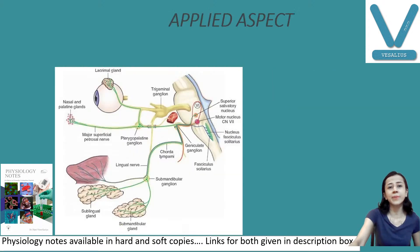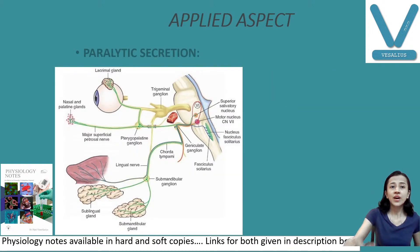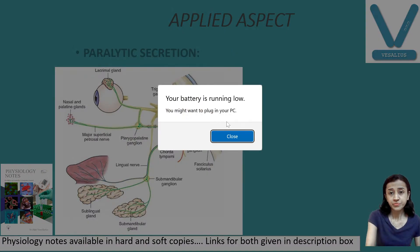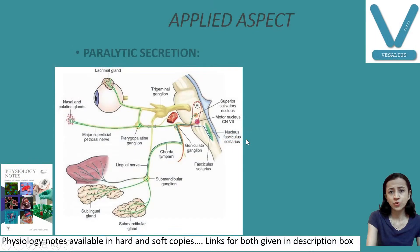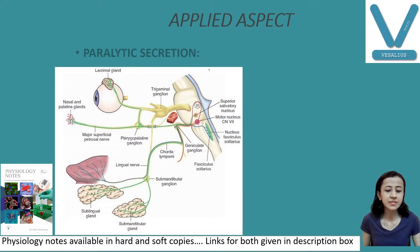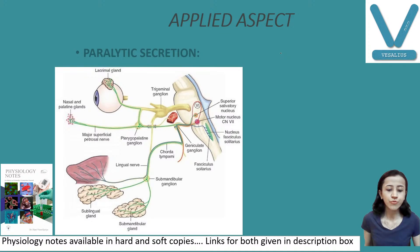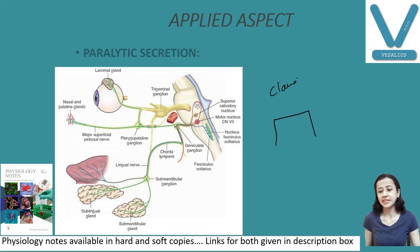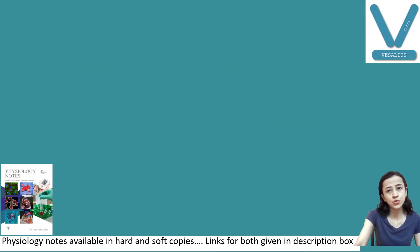Some applied aspects to discuss: paralytic secretion, an experiment carried out by Claude Bernard — when the nerve was cut, initially secretion rises, then remains elevated for three weeks, and then decreases again. This is paralytic secretion, an important applied aspect.